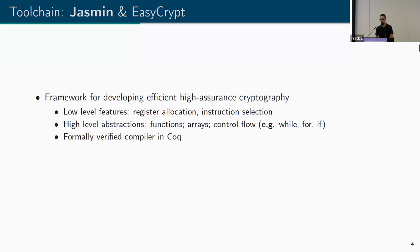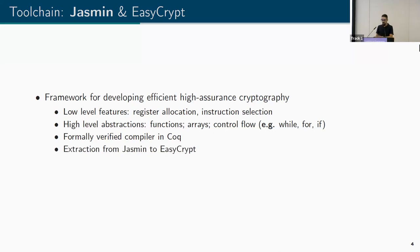Jasmine includes a formally verified compiler using the Coq proof assistant, giving two nice properties: the code written in Jasmine is proven to be semantically preserved in the assembly produced by the compiler, and constant-time preservation — if your code is constant time in Jasmine, it will also be constant time when compiled to assembly. The high-assurance part comes from the ability to extract Jasmine code to an EasyCrypt model, allowing us to reason about Jasmine programs using the EasyCrypt proof assistant.